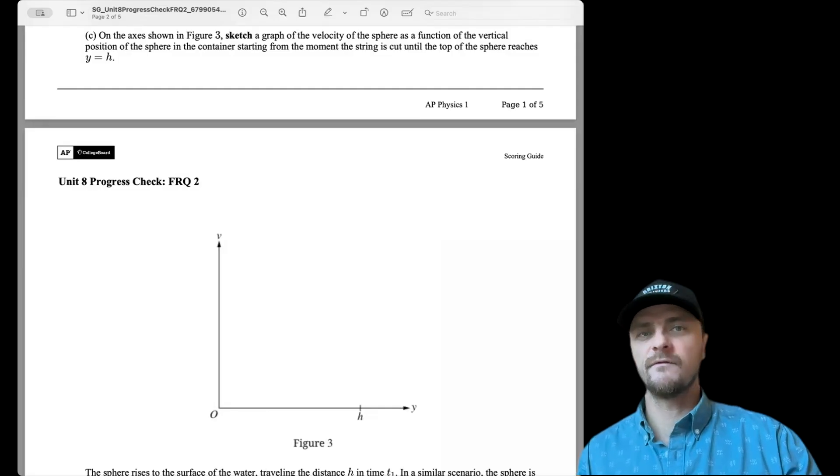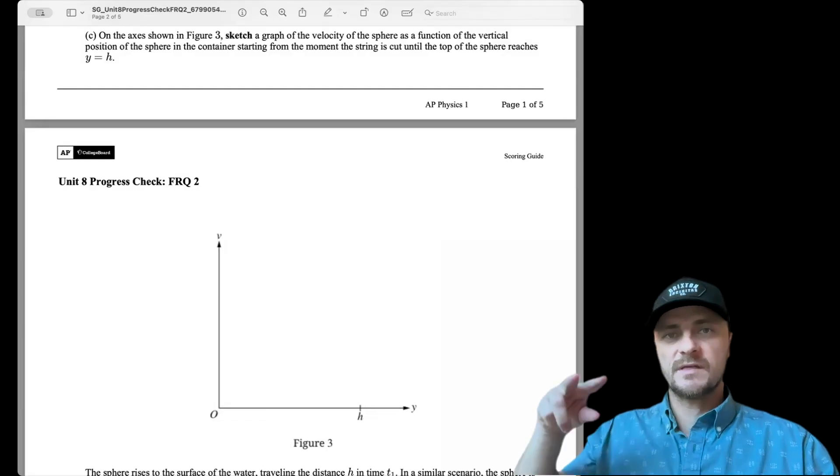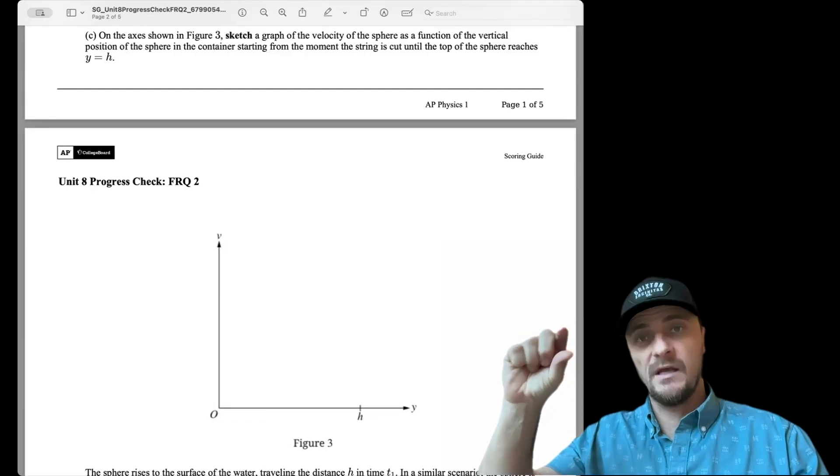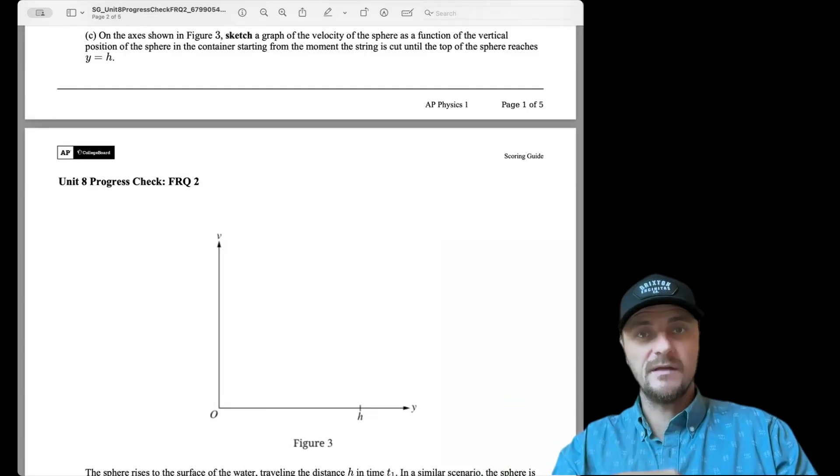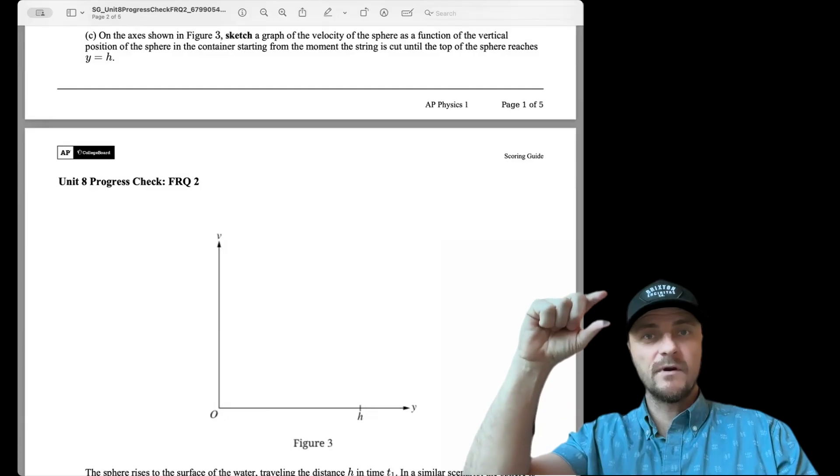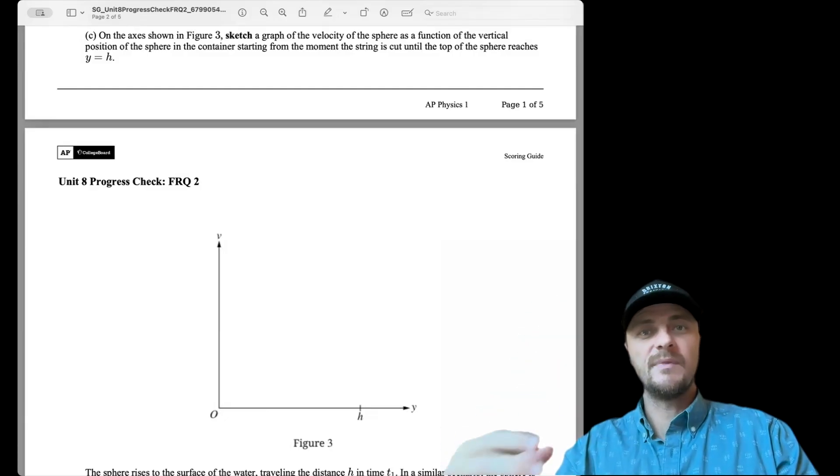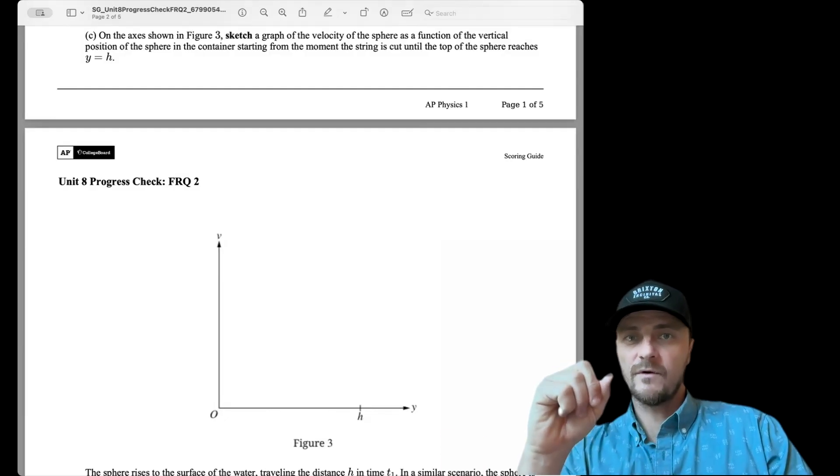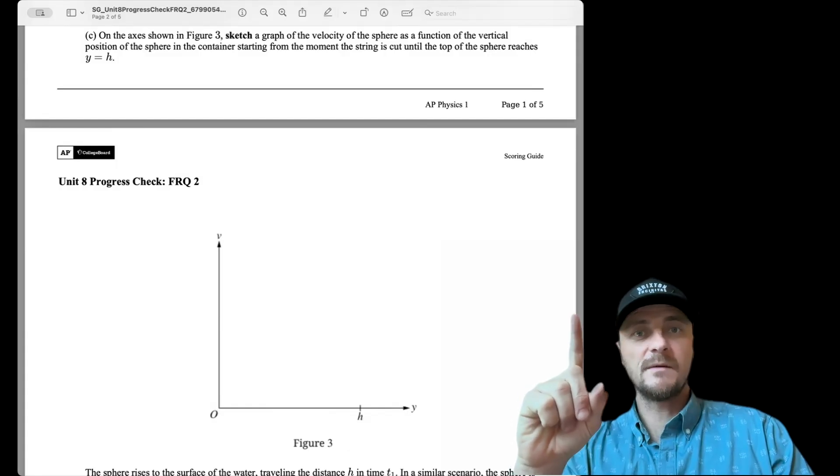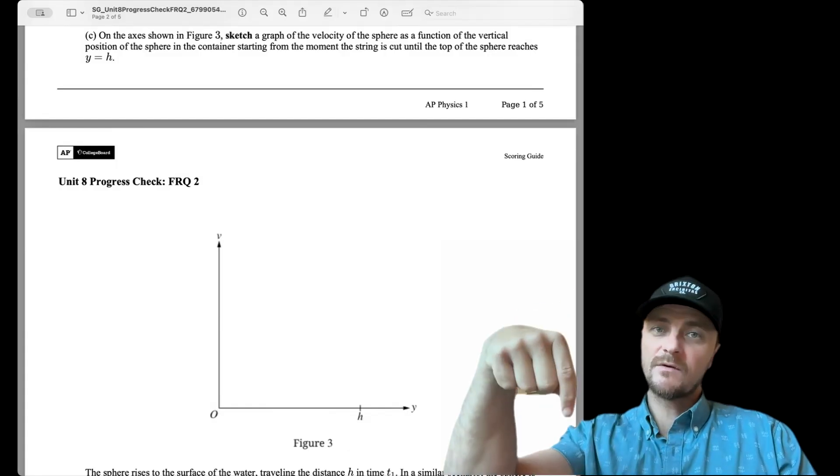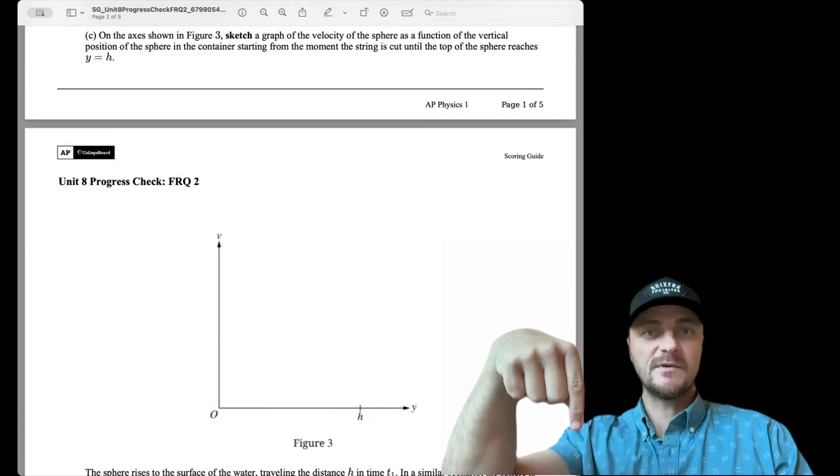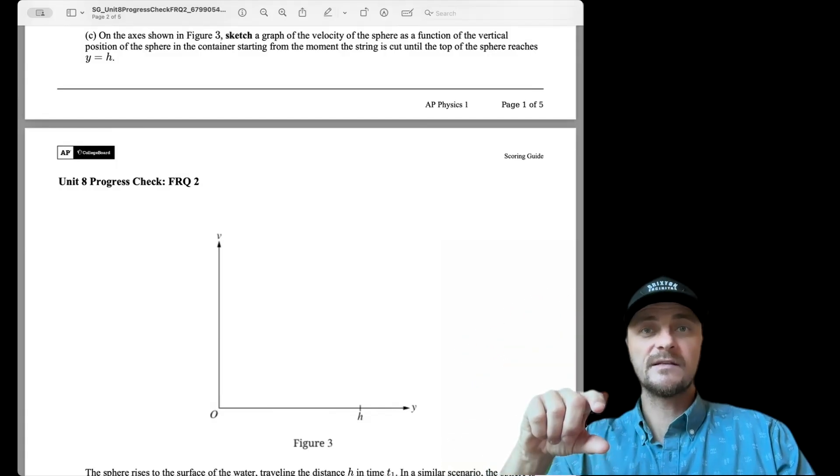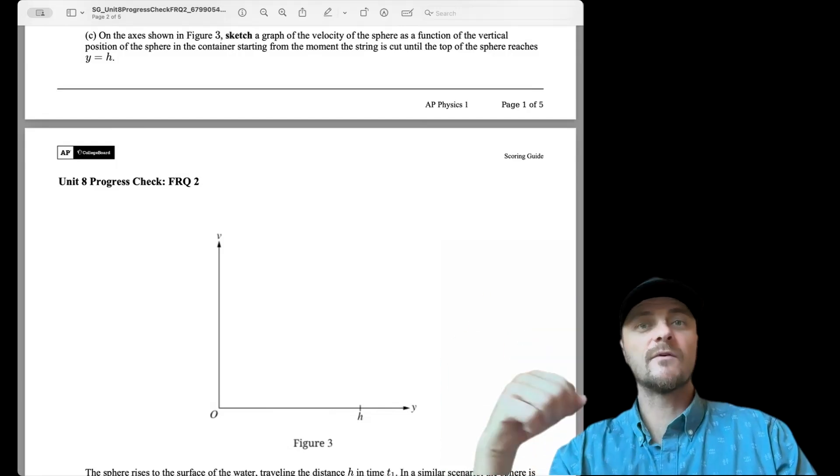On the axis shown in figure 3, sketch a graph of the velocity of the sphere as a function of the vertical position of the sphere in the container starting from the moment the string is cut until the sphere reaches y equals h. So what's important to realize in part b that we just did, when I cut that string, as it accelerates upward, that acceleration is constant. How do we know that? Because the net force is constant, which is causing that acceleration. If you look back at those forces, and you think about the buoyant force, which is made up of the density of the water, times the volume of the sphere times g minus gravity, which is the mass of the sphere times g, none of those five parameters change. And so the sphere has a constant net force as it rises, and therefore that acceleration is constant. We'll keep that in mind as we go over to the paper.